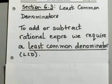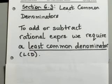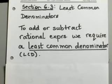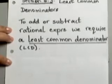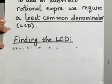Let's look at section 6.3. In this section, we are going to talk about least common denominators. Any time you are trying to add or subtract rational expressions, you require a least common denominator. Without that, you cannot add or subtract them. So, just like we did with fractions, that's the same concept we are going to apply here. Let's go ahead and see the process of finding the least common denominator.